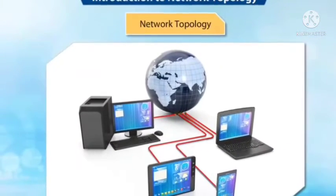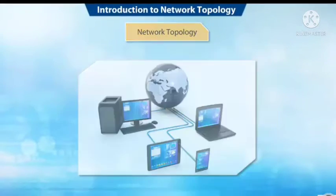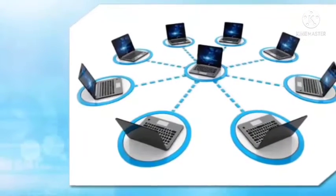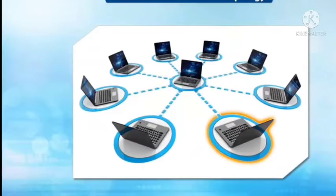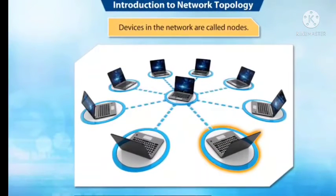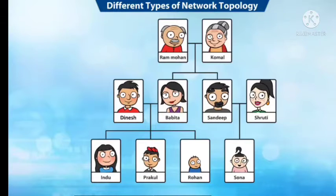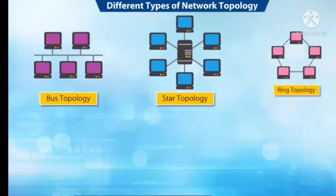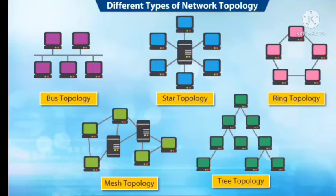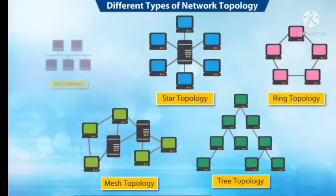You will find computers connected to each other in the computer lab — they are called nodes in network topology. In other words, devices that are in the network are called nodes. Just like in a family where there are different relations such as grandparents, parents, siblings, and aunties, there are different types of network topologies like bus, star, ring, mesh, and tree. Let us discuss each topology in detail.